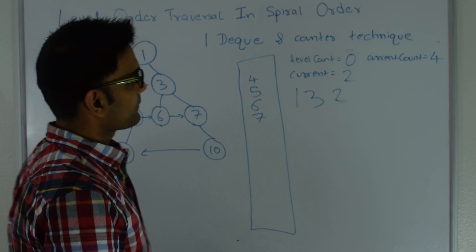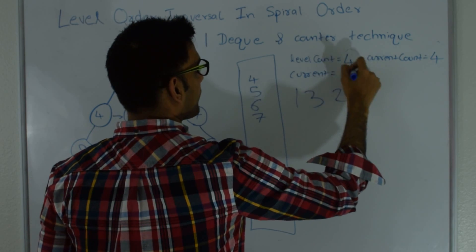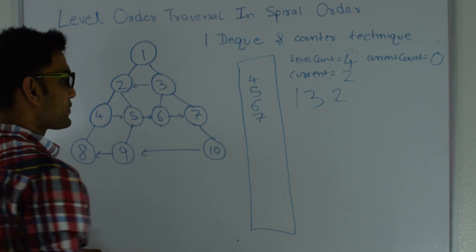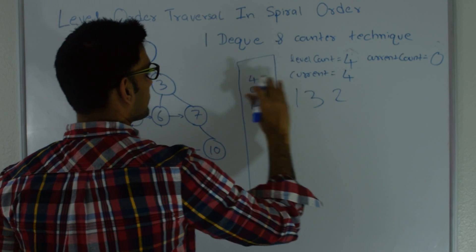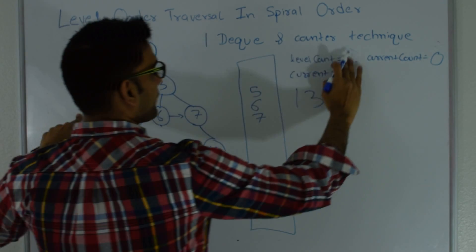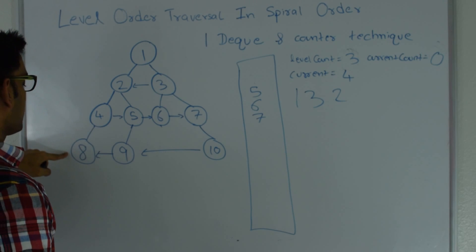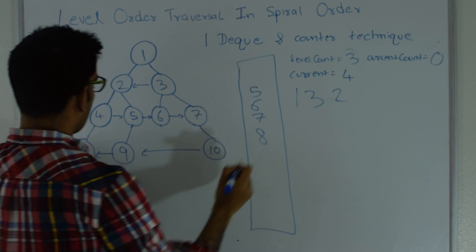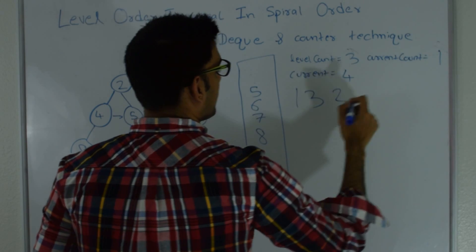As soon as level count becomes 0, it takes current count's value: level count becomes 4, current count becomes 0, and I start reading from the top of the queue. Current becomes 4; level count decrements to 3. 4 has a left child added to the bottom; no right child; current count increments to 1; print 4. Pop again — current becomes 5; level count becomes 2. 5 has a left child at the bottom; current count becomes 2; print 5.